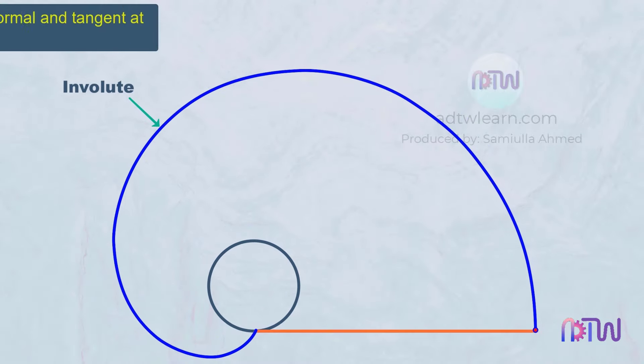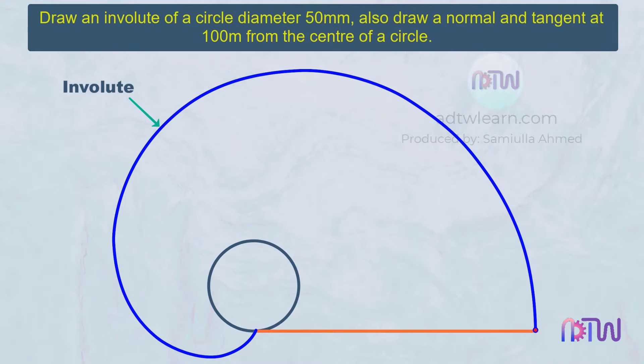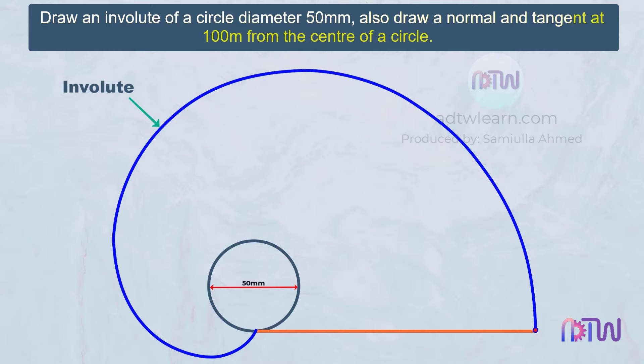Here are the instructions to draw. Draw an involute of a circle of diameter 50 mm. Also, draw a normal and tangent at a point 100 mm from the center of the circle.